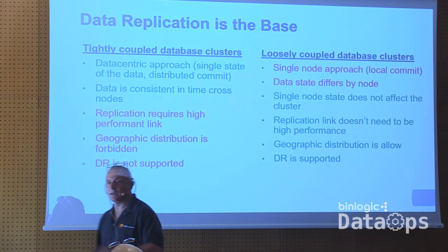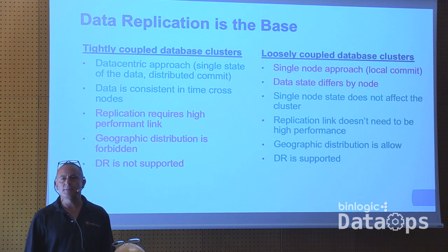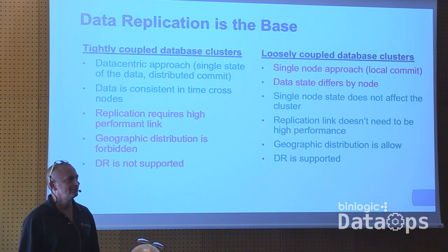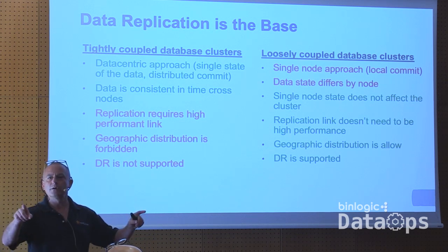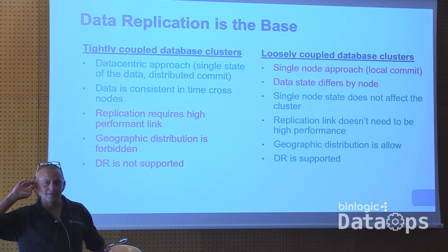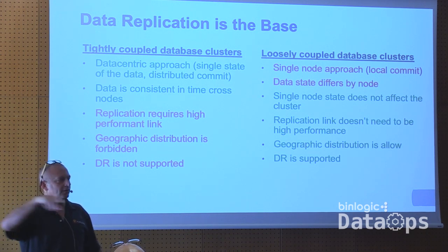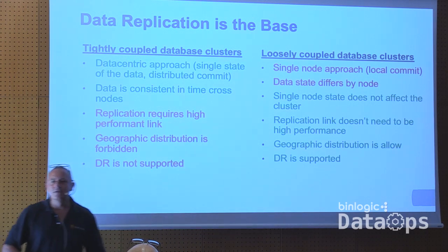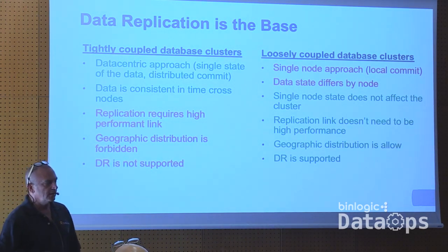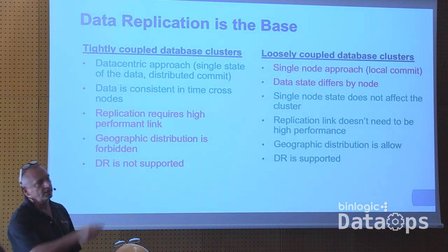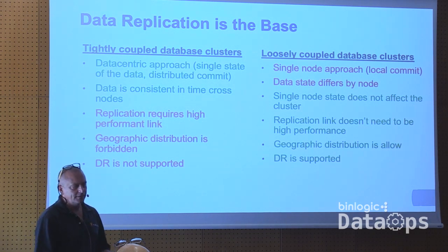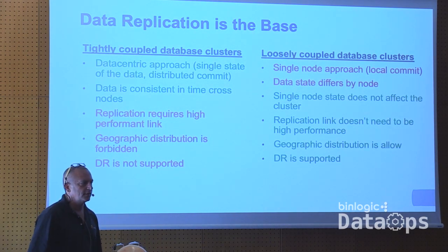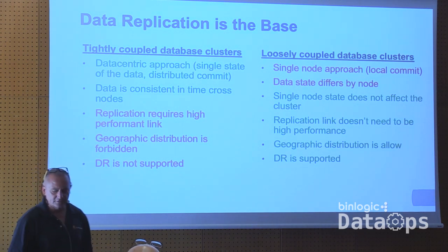In loosely coupled database clusters, single node approach with local commit means data differs between nodes, and a single node state does not affect the others. The replication link doesn't need to be high-performance, you can have geographical distribution, and you can normally use DR. Now, what is DR? How many of you have a DR solution implemented? How far apart are the two sites? Two continents? Only 200 kilometers is not really a DR — if an earthquake happens, you are probably not safe.